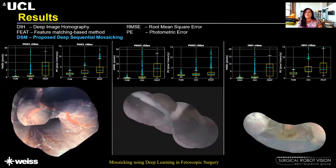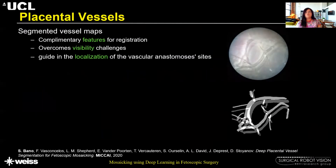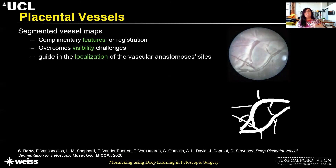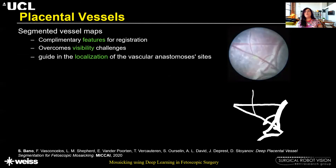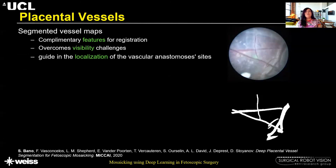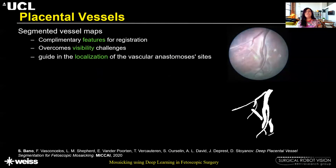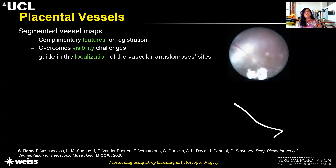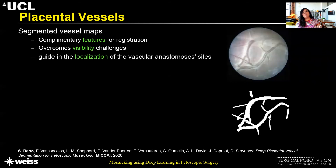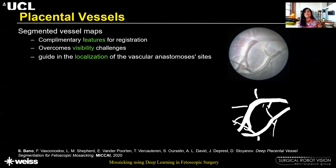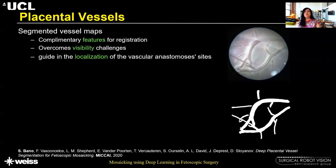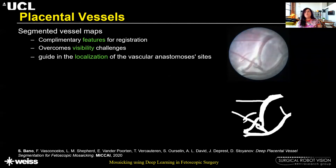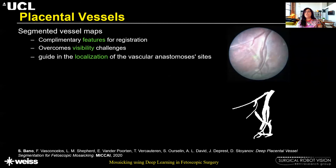To further improve results, we started looking into vessel segmentation. Placental vessels are unique landmarks, and segmenting these vessels to obtain vessel maps can provide complementary features for registration. We noted that many of the visibility challenges related to lighting conditions and moving occlusions are actually filtered out when obtaining a segmented vessel map, which significantly helps improve registration compared to image-based methods.